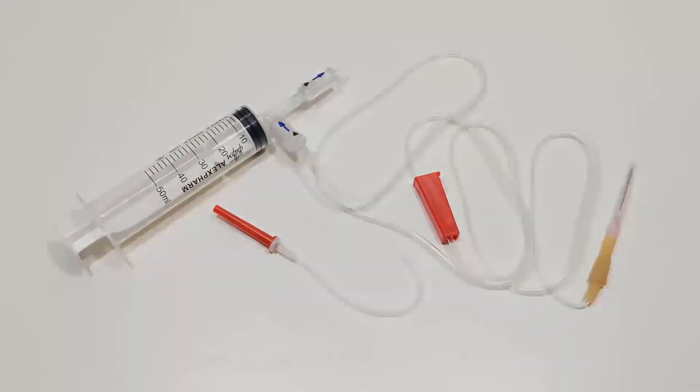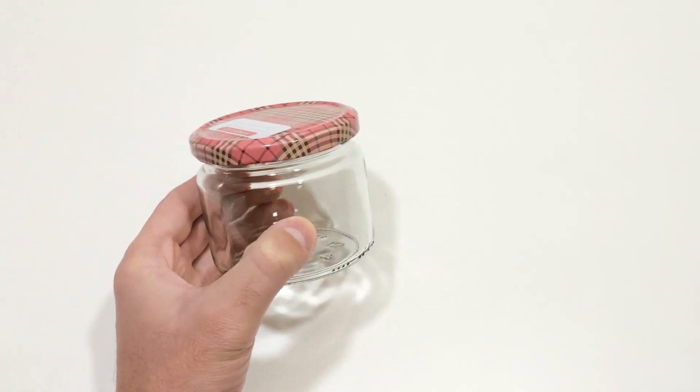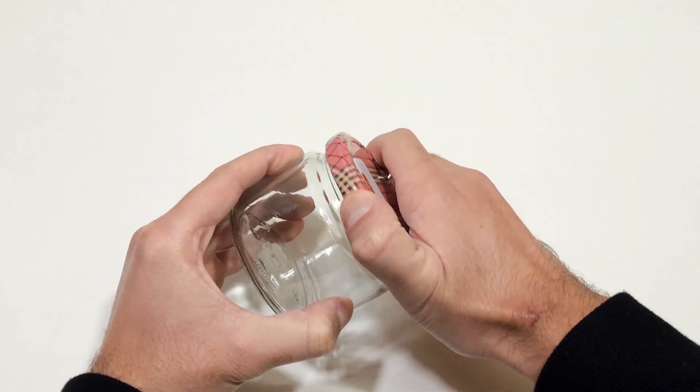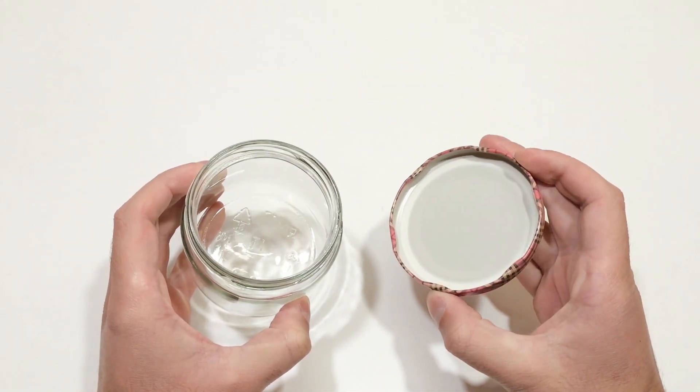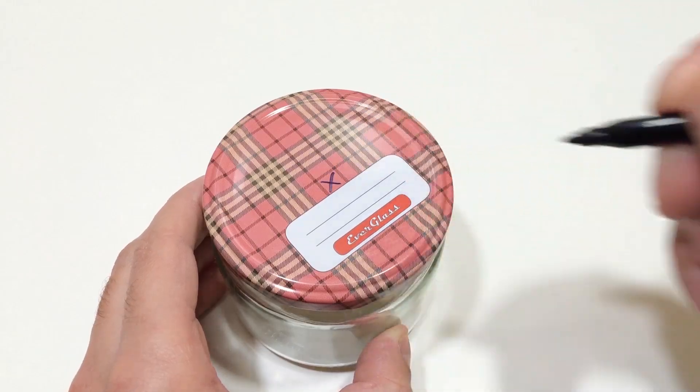Now let's move on to testing. But first, we'll build a simple vacuum chamber to try it out. You'll need a glass jar with a metal lid. That's important. Start by drilling a hole in the lid.